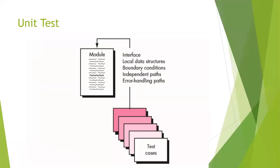This pictorial representation shows what was described earlier — test cases written according to the five types of consideration: module interface, local data structures, boundary conditions, independent paths, and error handling paths — all corresponding to a given module.